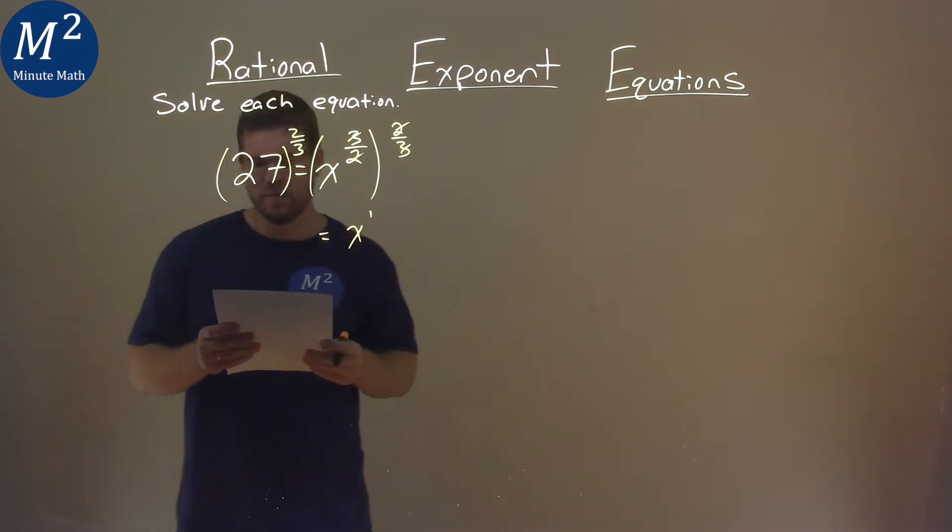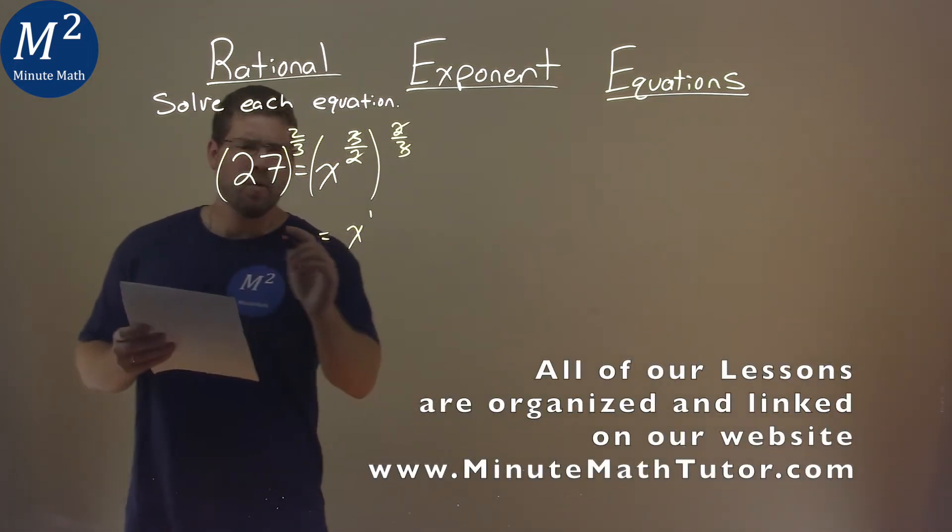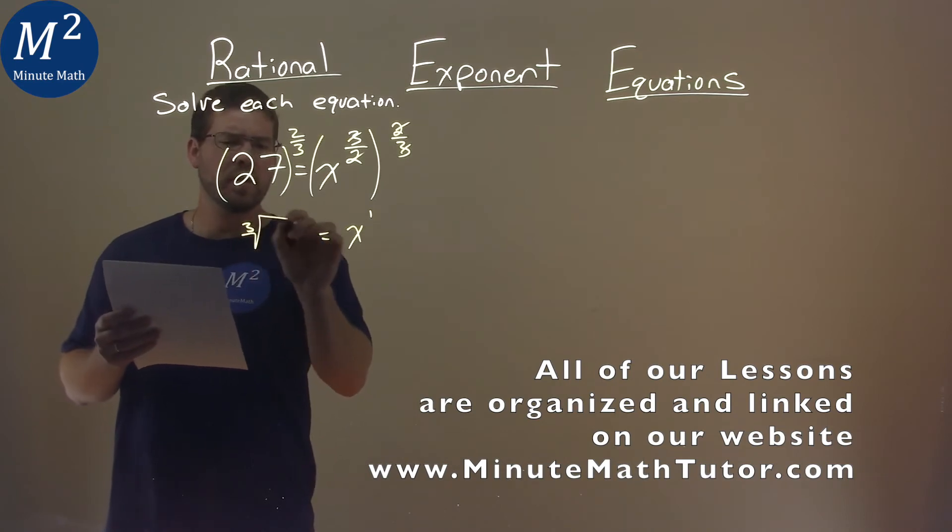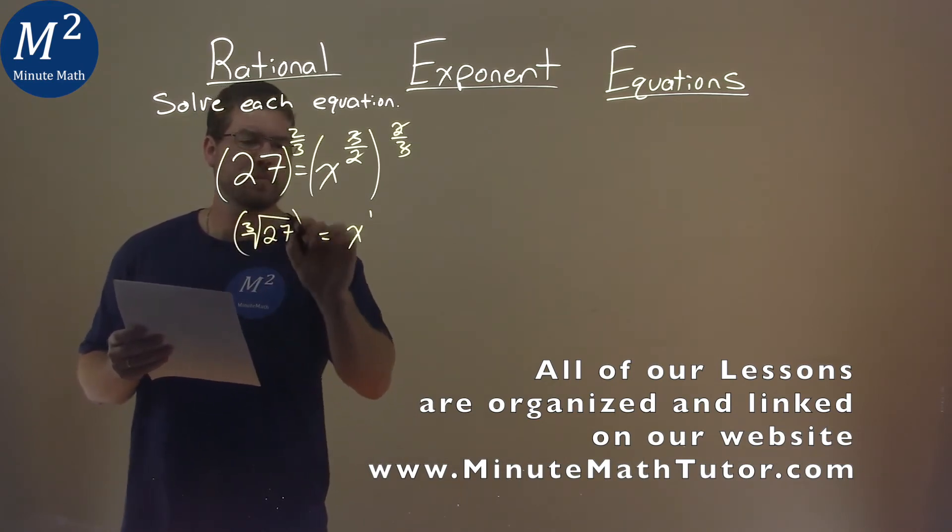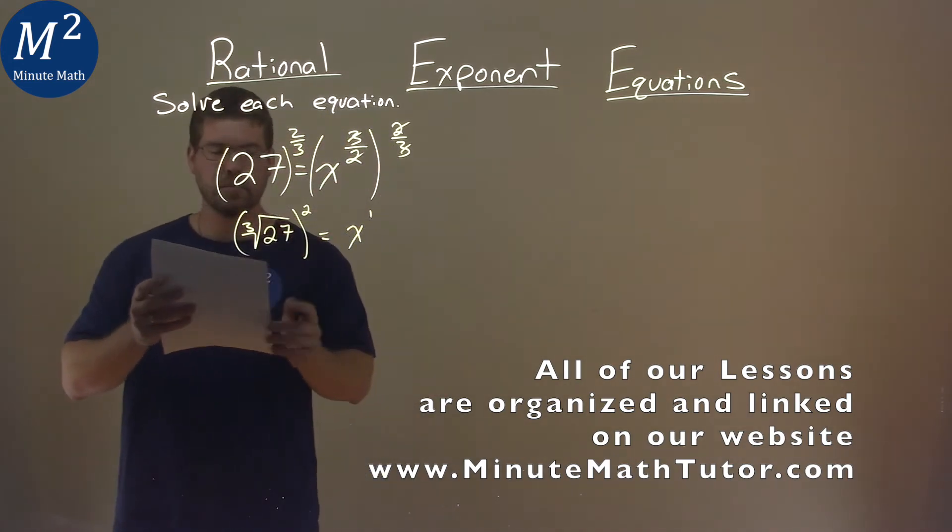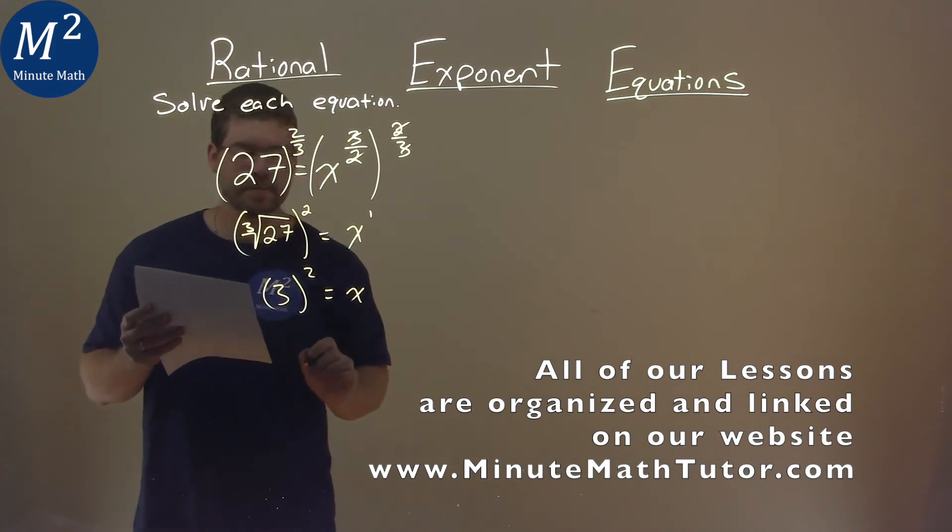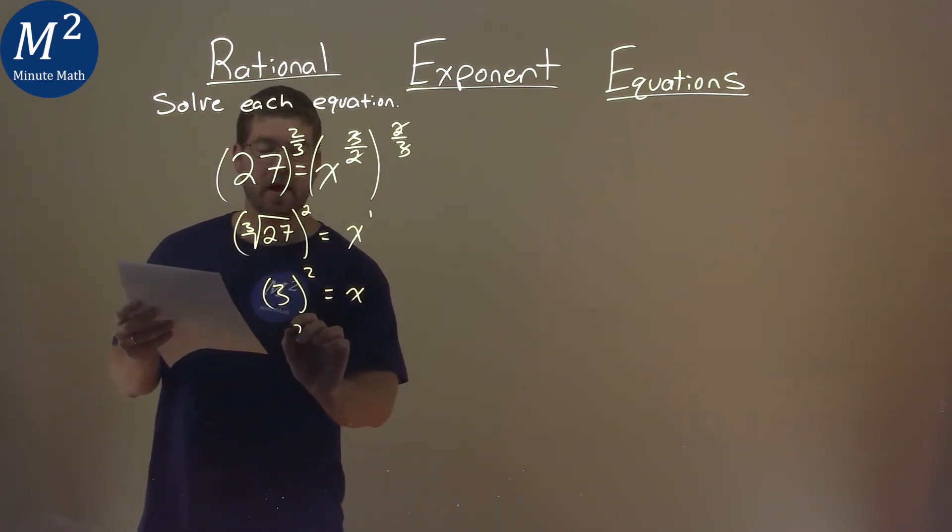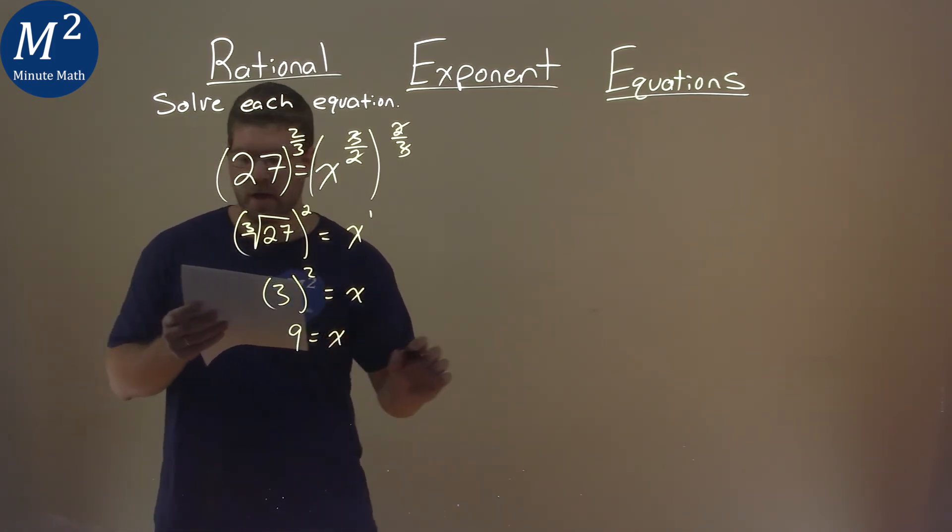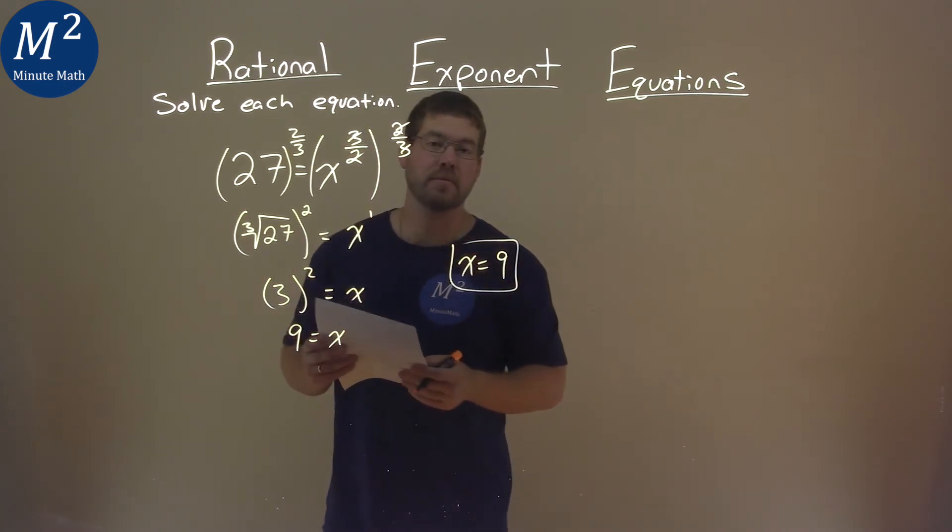The left side here, we have 27 to the 2 thirds power, what is that? Well, that's the third root of 27, all squared. So what's the third root of 27? That's a 3, that's equal to our x here, and 3 squared is a 9. And so our final answer here is just x equals 9.